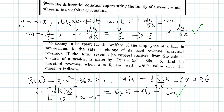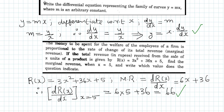The rate of change of total revenue means it is a first order derivative. So marginal revenue equals d R(x)/dx, which is equal to 6x + 36. We have to find the marginal revenue when x = 5. Substituting, we get 6(5) + 36 = 30 + 36 = 66, which is the correct answer for the given problem.